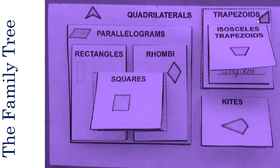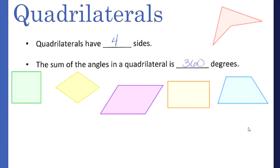Feel free to draw some example shapes on the outside of your foldable if you forget what a rhombus or kite looks like. Our first foldable flap should be quadrilaterals. They're the overarching umbrella term for a shape that has four sides, and the sum of the interior angles inside a quadrilateral is going to be 360 degrees, which we learned a couple of videos ago.